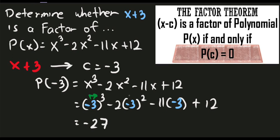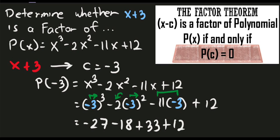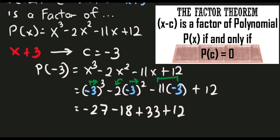Next, negative 3 squared is 9, and 9 times negative 2 is negative 18, so minus 18. Next, negative 11 times negative 3 — both negative — gives positive 33. And copy the remaining plus 12. Simplifying: negative 27 minus 18 plus 33 plus 12. Negative 27 minus 18 is negative 45, and 33 plus 12 is 45. So negative 45 plus 45 is 0.